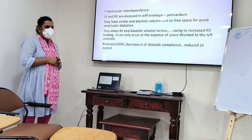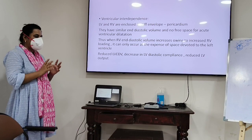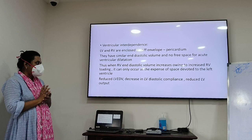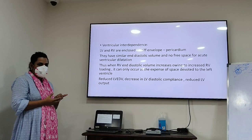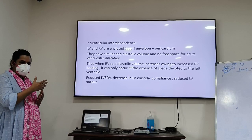There is also ventricular interdependence. The LV and RV are both enclosed in the stiff envelope of the pericardium, so they share a similar total pericardial volume with no free space for acute increases in volume. When RV loading increases, dilatation of the RV can only occur at the expense of space devoted to the left ventricle, causing reduced LV end-diastolic volume, decreased LV end-diastolic compliance, and reduced LV output.